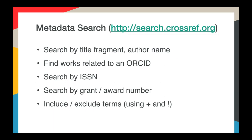Our metadata search interface can be used to look up DOIs for a citation or look up the metadata for a DOI. You can enter a reference and if we have a record for that item it will most likely be the first match, but that's not a guarantee — so you need to evaluate the results closely like any other discovery service. If you're not searching for a specific item, you can enter a portion of a title, a specific term, an author name, an ORCID, ISSN, grants or award numbers, and get results. You can also include or exclude terms. Its purpose is to connect the community with metadata records, connect metadata records to ORCIDs, and to identify the DOI for an item — it's not really a discovery service.